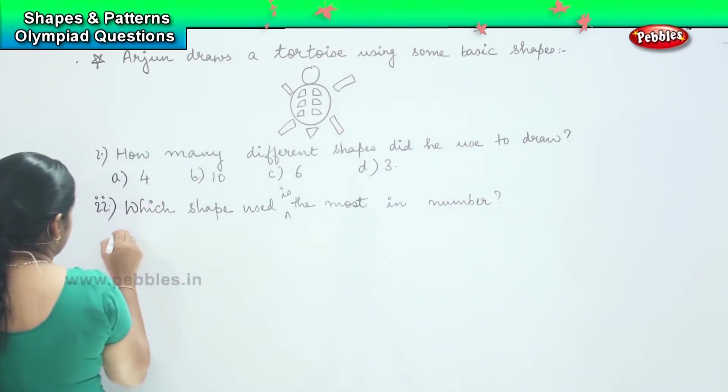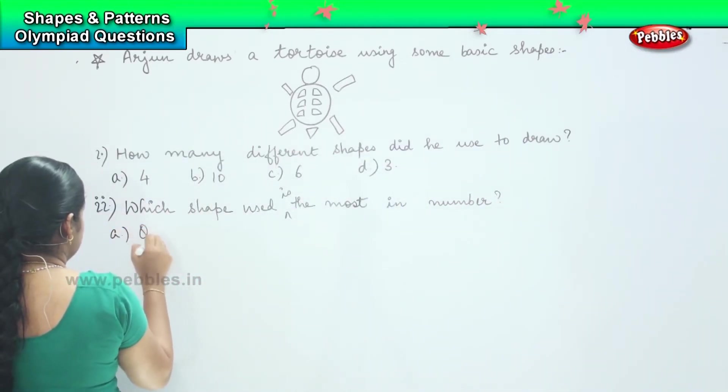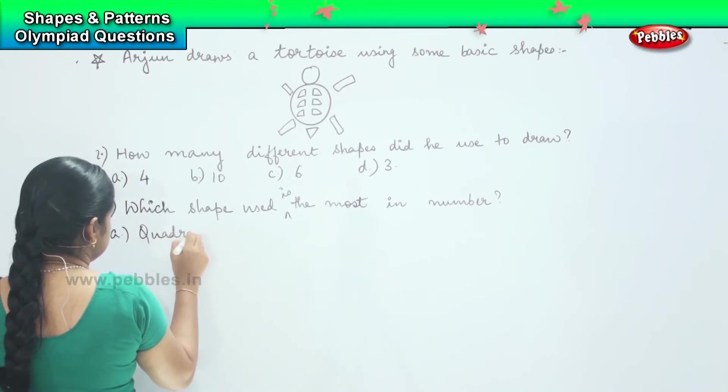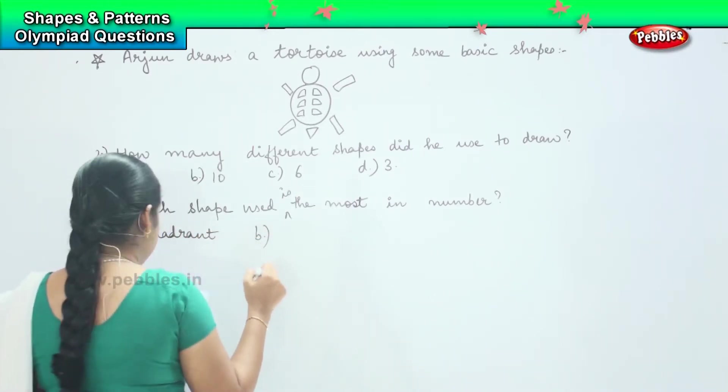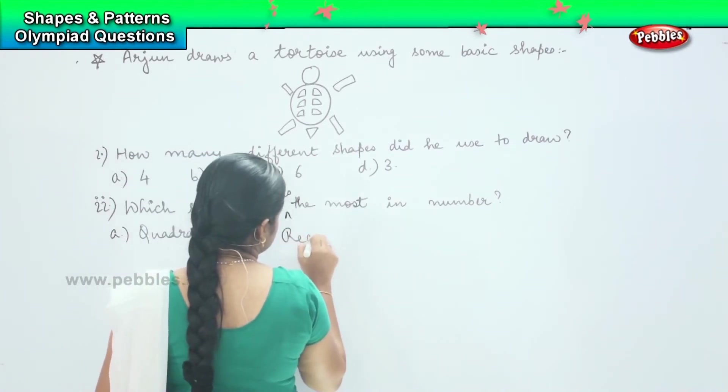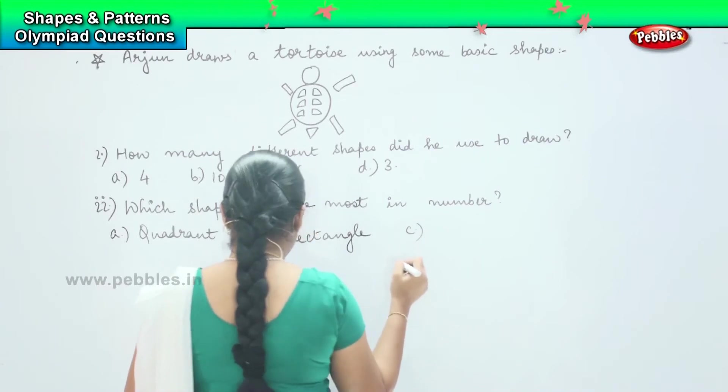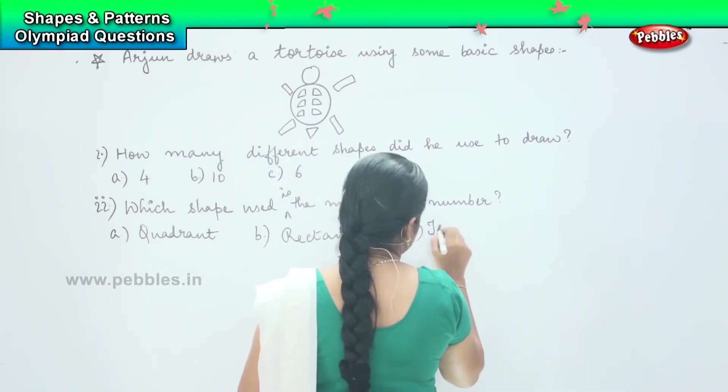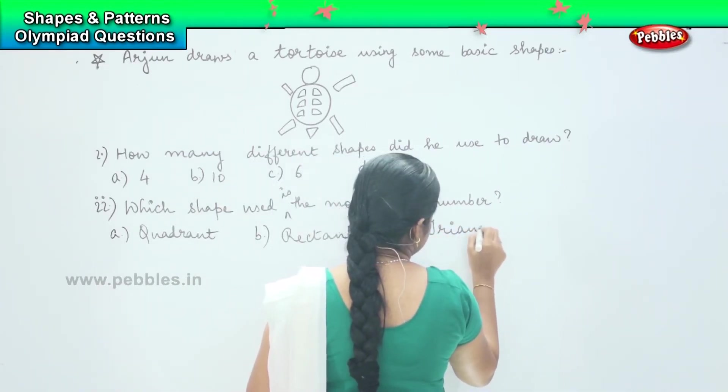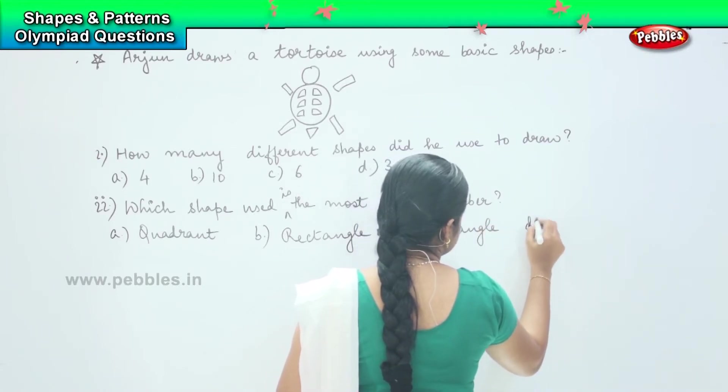And your options are A) quadrant, B) rectangle, C) triangle, and D) 5.